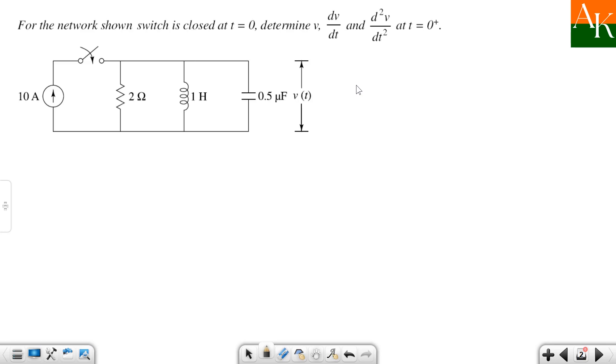If you observe this circuit, this is parallel combination of R, L and C and they are asking us to calculate V, dV by dt and d²V by dt² at t equals 0 plus, and V of t they have shown over here.